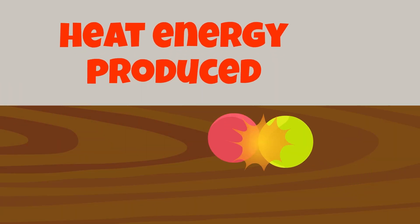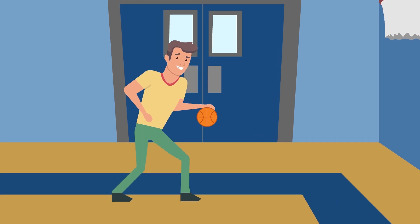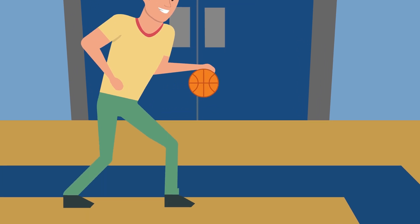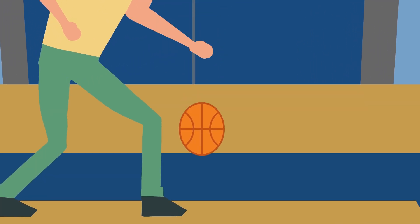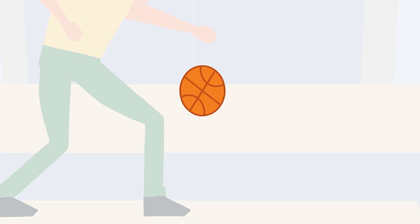When one object comes in physical contact with another object, a lot of stuff happens. Certain forces come into play, velocities of the objects are affected, and energy is converted from one form to another. Let's consider the most basic example: bouncing a basketball on a rigid floor. When you drop the basketball from a given height, you probably just see the ball dropping to the floor and bouncing up back towards your hands. On the surface, this looks simple enough, but there are a number of physical phenomena at play.